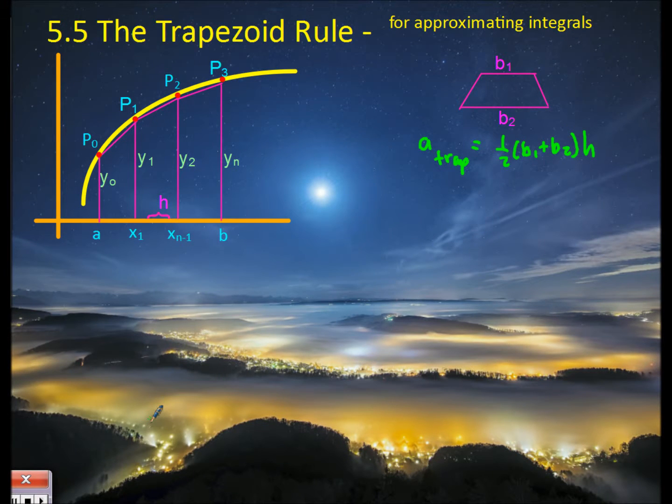I'm here to talk about section 5.5, the trapezoid rule. This technique is used for approximating the area under a curve using trapezoids.